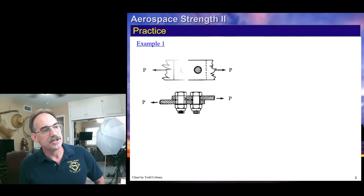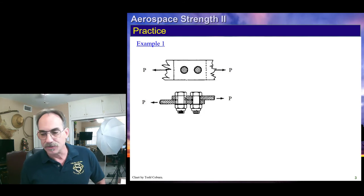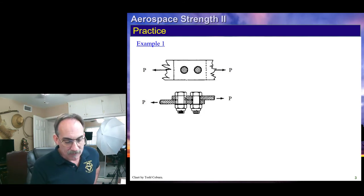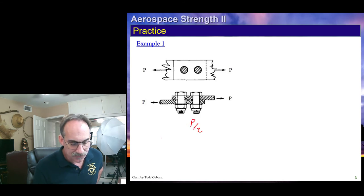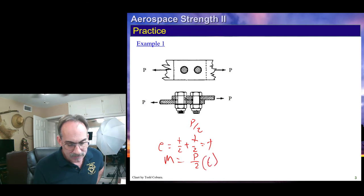If we take a look at this joint, we see that we have two fasteners, which means the force per fastener is P over 2. That's the force per fastener. Our eccentricity is just, if they're the same thickness, it's just T over 2 plus T over 2 equals T. And that means our moment is just going to be the force per fastener, which is P over 2, times that eccentricity, whatever that is.